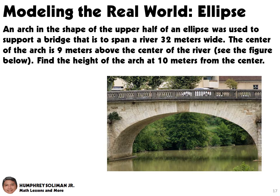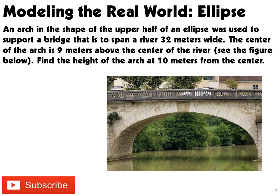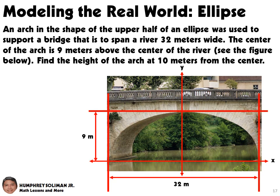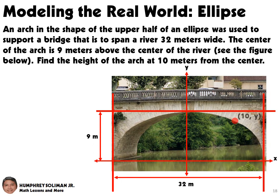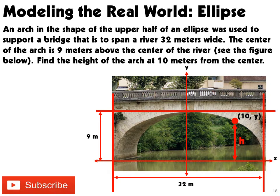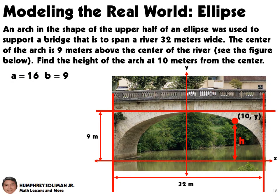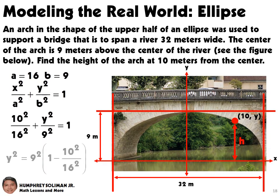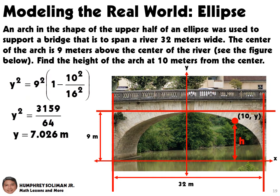Let's now discuss a real world problem involving an ellipse. An arch in the shape of the upper half of an ellipse was used to support a bridge that is to span a river 32 meters wide. The center of the arch is 9 meters above the center of the river — see the figure below. Find the height of the arch at 10 meters from the center. To solve this, we will put the center of the ellipse at the origin and solve for the height of the arch at 10 meters from the center. Since the river is 32 meters wide, a will be 16 meters, and the height of the bridge is 9 meters, so b will be 9 meters. We will use these values in the standard form of equation of an ellipse with the horizontal major axis and then solve for y. Simplifying, this will give us y ≈ 7.026 meters. The height is approximately 7.026 meters at 10 meters from the center.